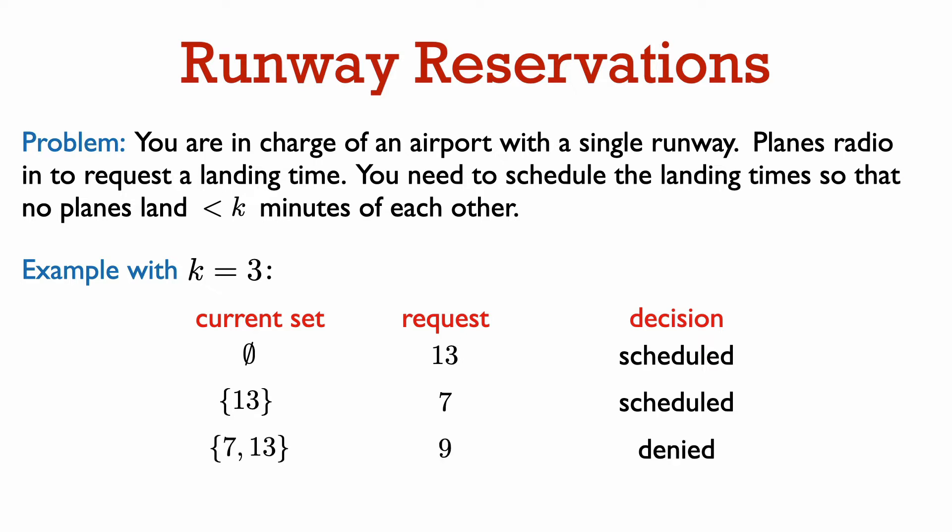Next, a request comes in to land at time 9, but this is just 2 minutes away from time 7, which is already in our set, so we deny this request and do not add 9 to our set of landing times. Finally, a request to land at time 22 comes in. This has no conflict, and therefore, we can also add it to our set.